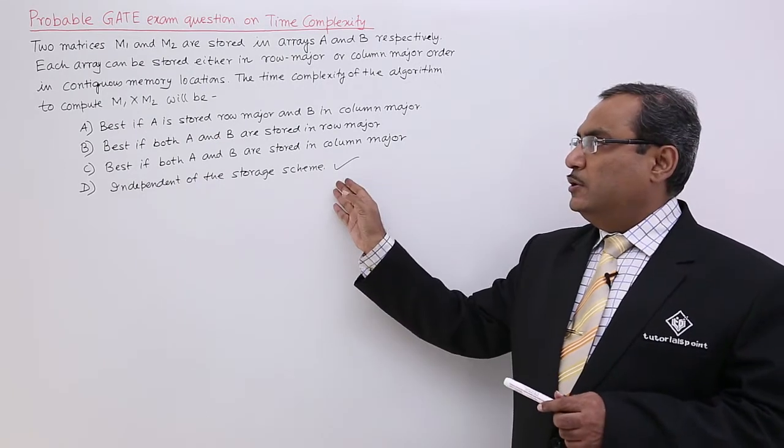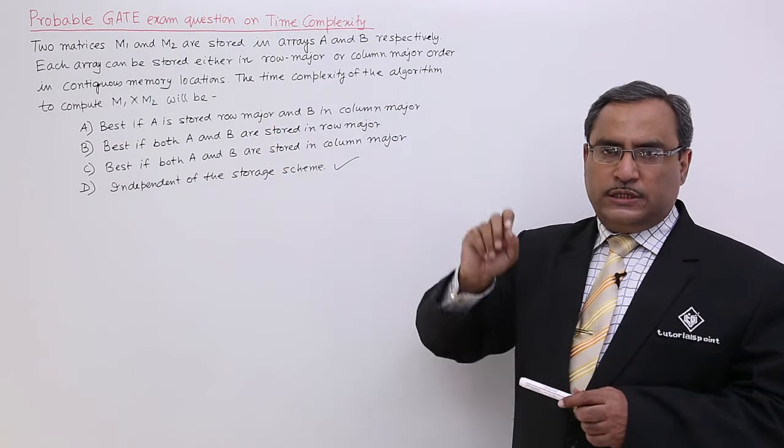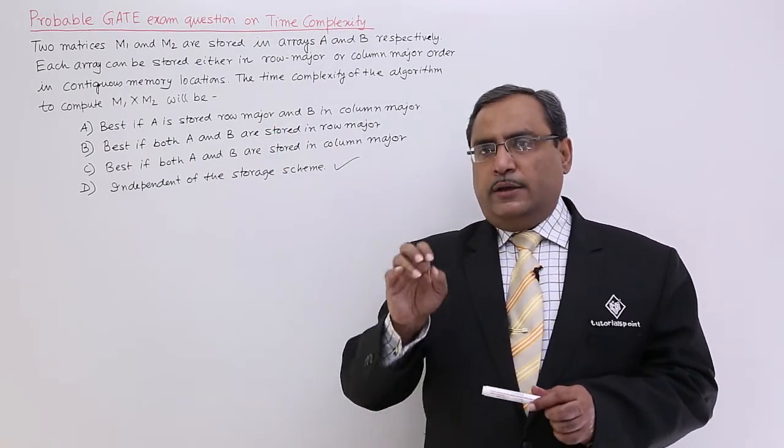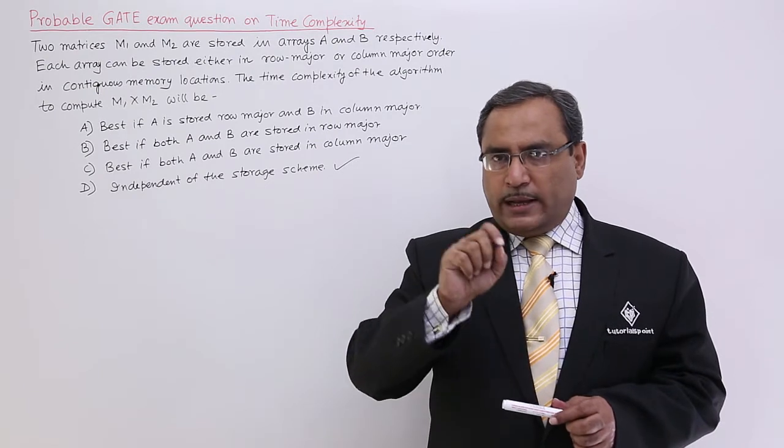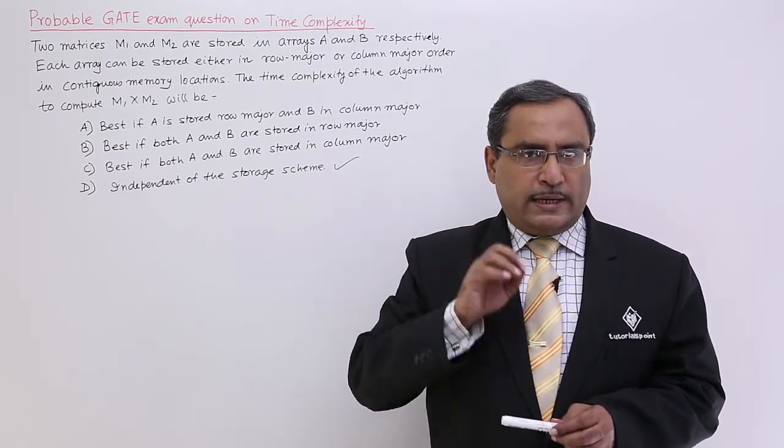So remember this one. Don't get misguided that option A will be the choice. Always remember to access one array content with respect to a certain row and column number is a constant time. It requires a constant time.